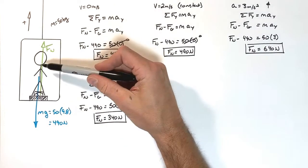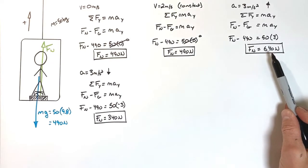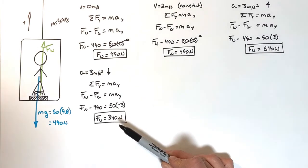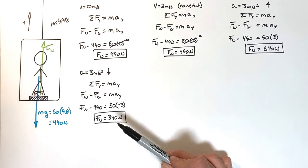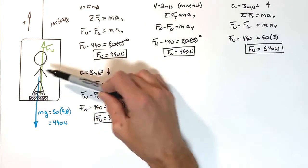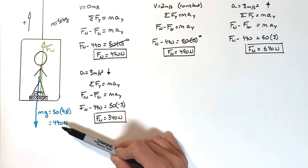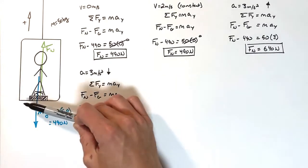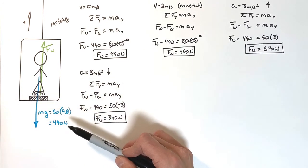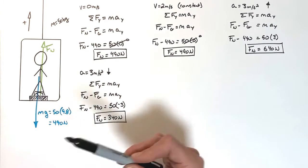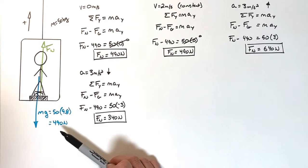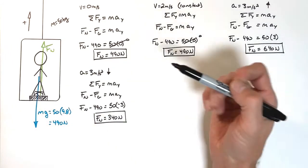In the upward acceleration case, the person feels heavier. In the downward acceleration case, the person feels lighter. What's strange is they feel as though they have more or less weight, but their actual weight hasn't changed. The strange part about all this is you don't actually feel gravity pulling on you — what you feel is something getting in the way, keeping you from falling downward. You don't feel gravity.